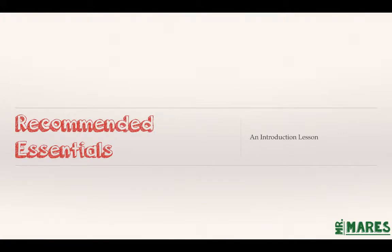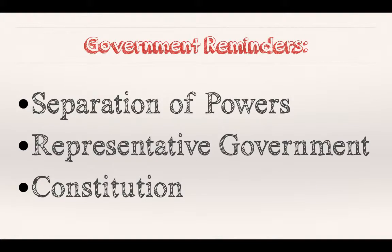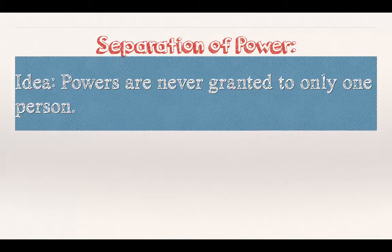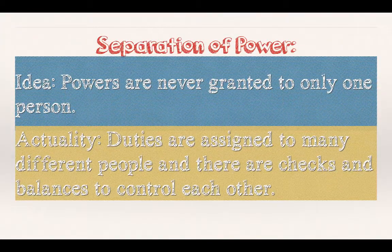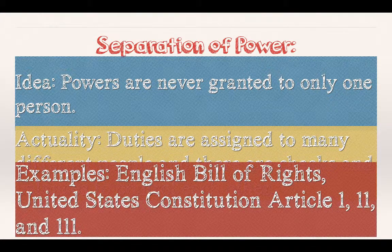Now I want to talk about recommendations — some essentials I would recommend you include in your government. The three topics are: separation of powers, representative government, and the Constitution. When we talk about separation of powers, powers are never granted to only one person; duties are assigned to many different people, and there are checks and balances to control each other. Think of the United States and the English Bill of Rights. The Constitution lays out Articles 1, 2, and 3, which establish those checks and balances.